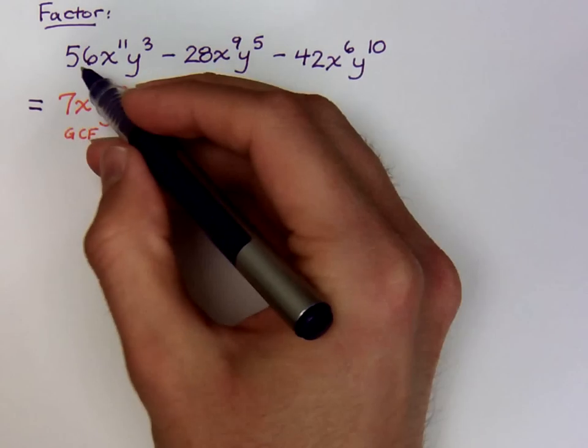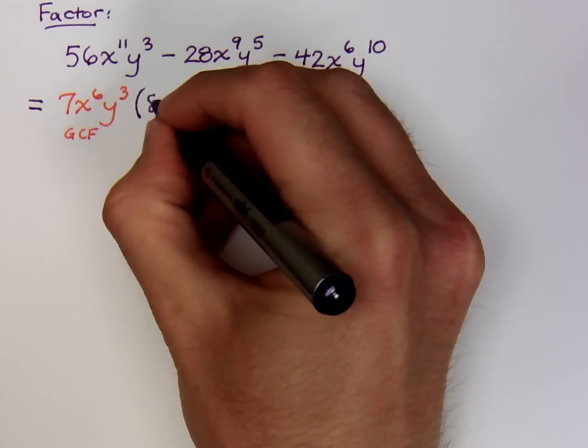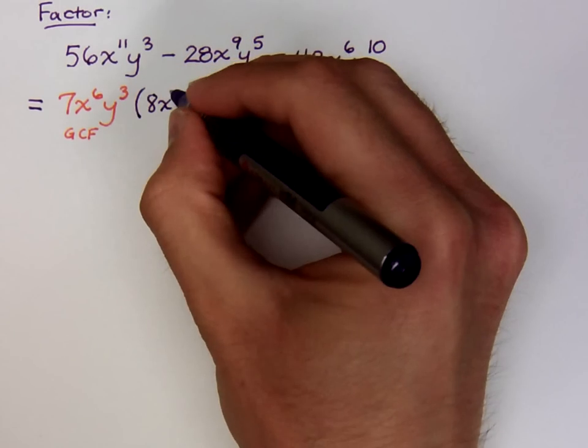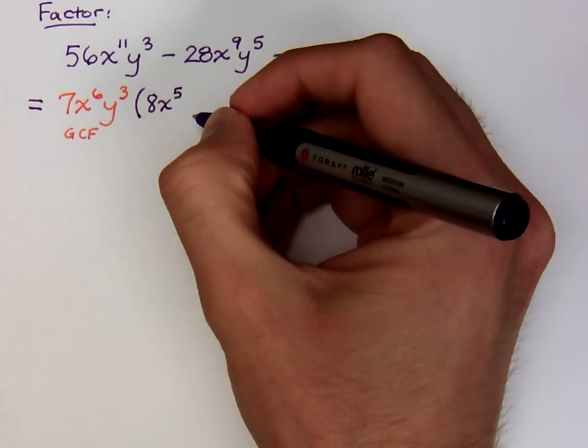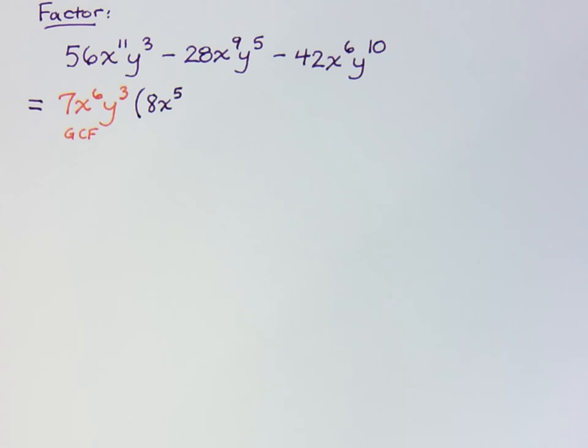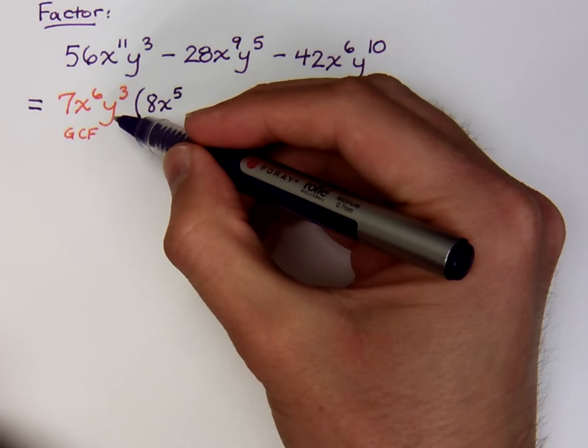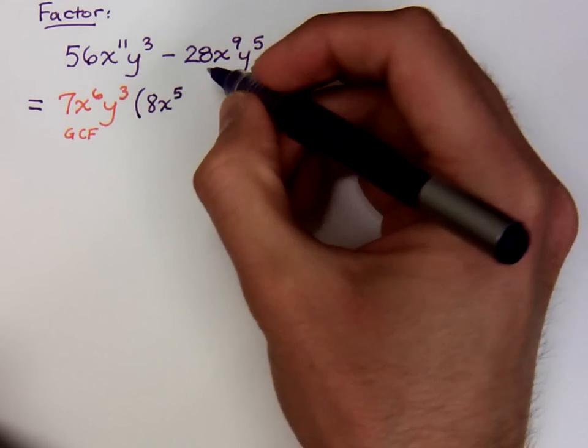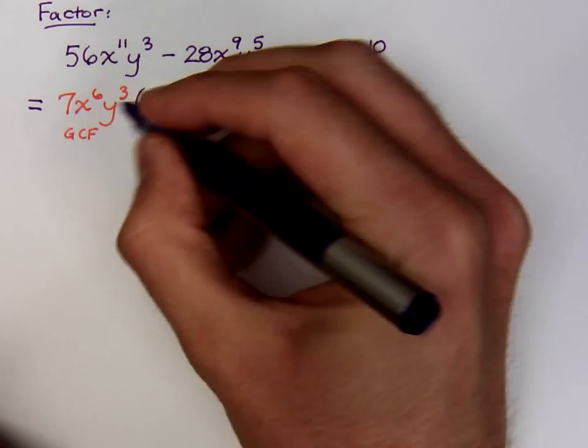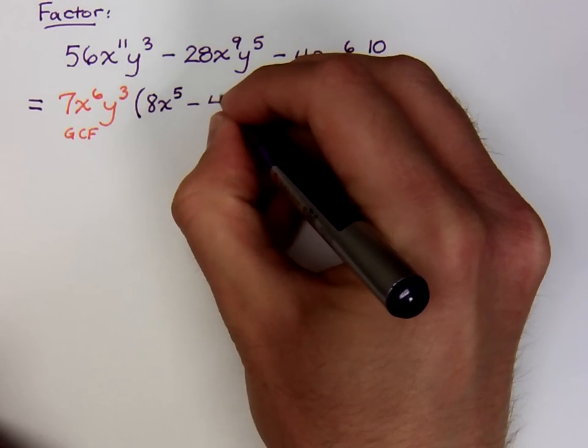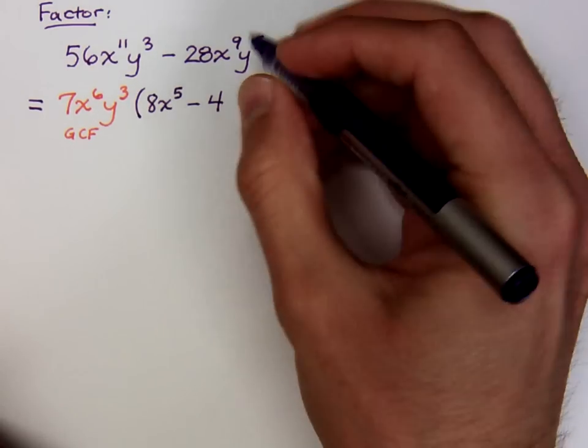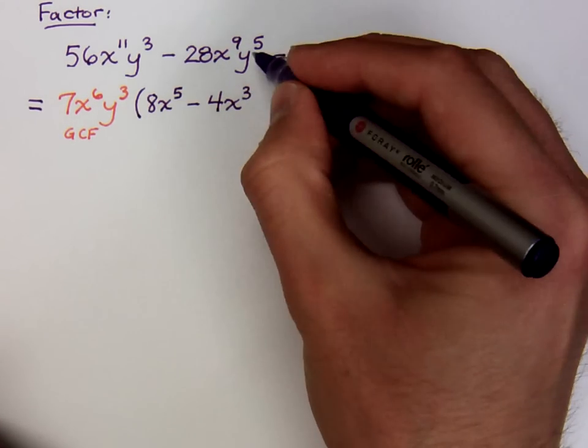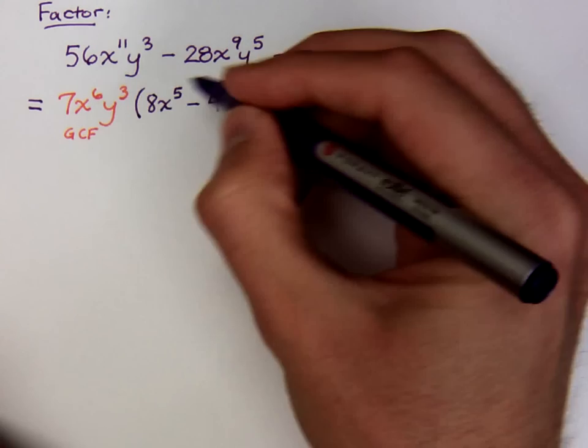Well, let's see. Fifty-six divided by seven is eight. Now how much x do you have left? Well, we had eleven, we took away six, and that gives me just five. How much y do you have left? Well, we had three factors of y. We took away three factors of y, so we have no y's left. Alright, well this guy's done. Now here I've got a negative twenty-eight divided by a positive seven, so that's a minus four. Now how much x? We had nine x's here, we took out six, so nine minus six of course is three. We had five y's, we took away three, so that's y squared.